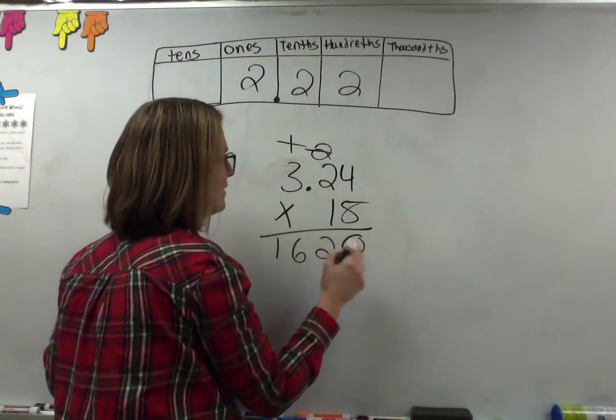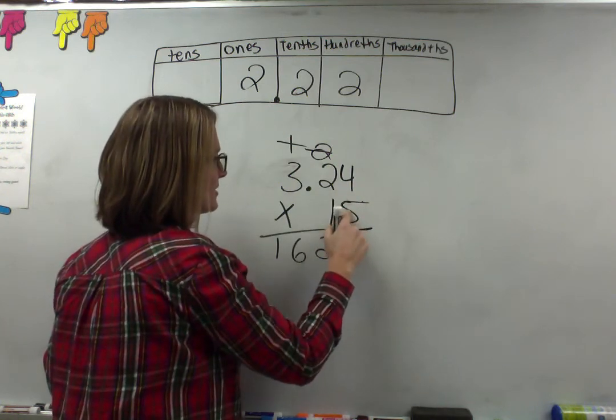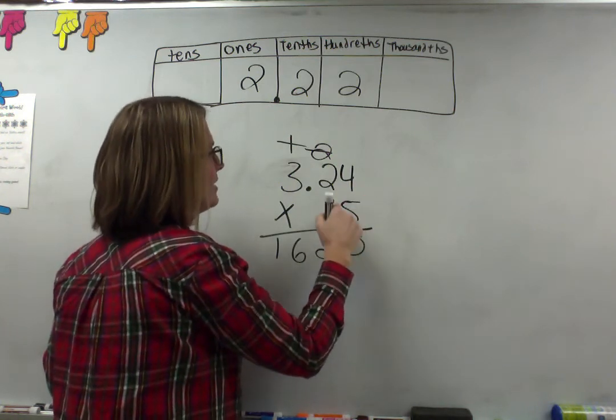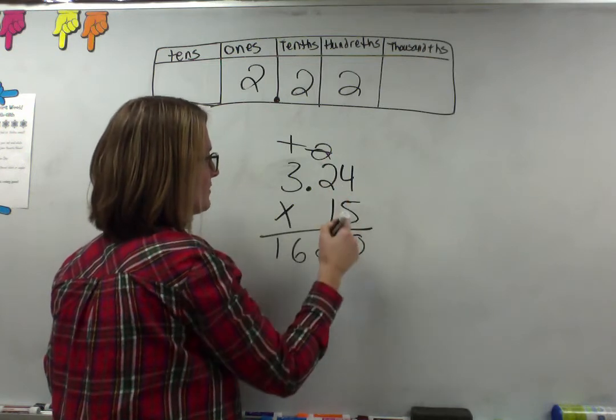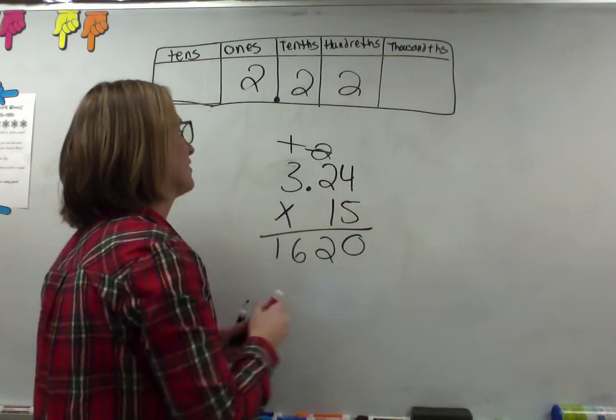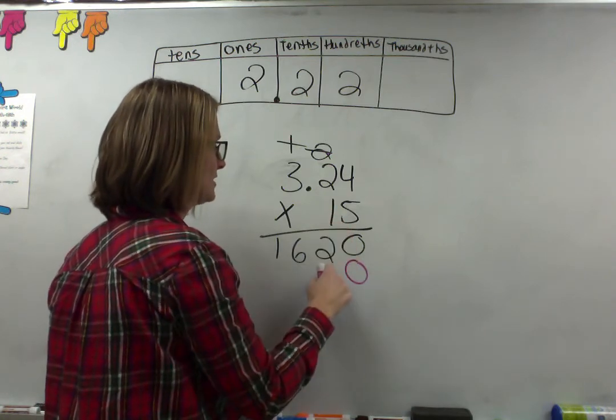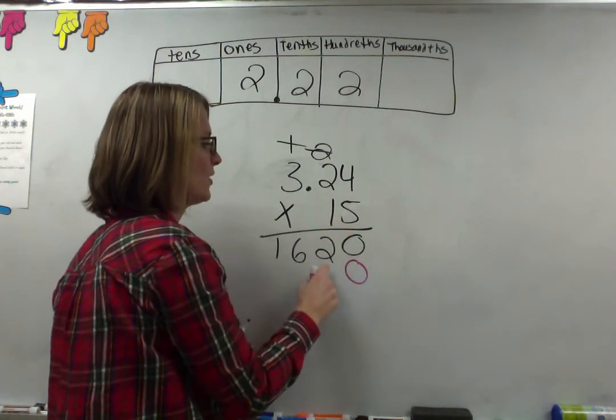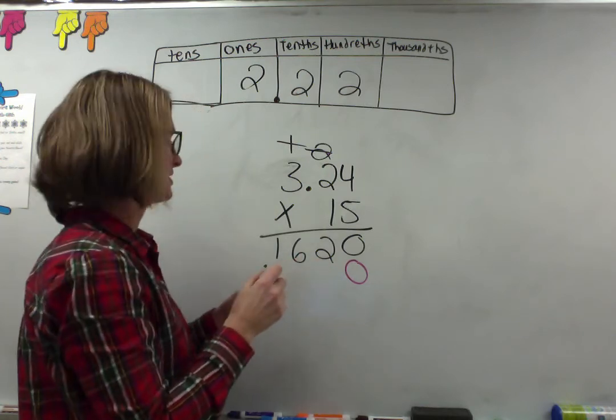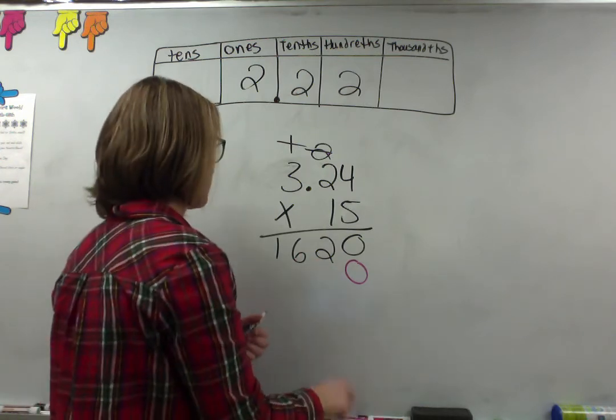Now I have to multiply 1 times everything. Before I do that, remember I have to put a zero because my answer needs to start in the tens place because the 1 is in the tens place. So I have to put that magic zero.